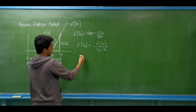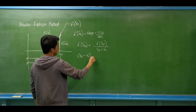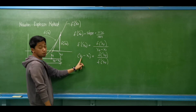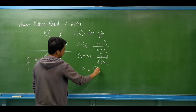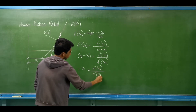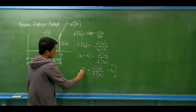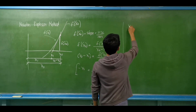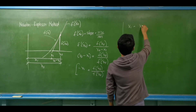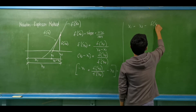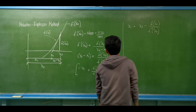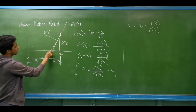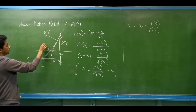We do a cross multiplication: x sub 0 minus x sub 1 is equal to f of x sub 0 divided by f prime of x sub 0. Then we transpose x sub 0, so negative x sub 1 equals f of x sub 0 over f prime of x sub 0 minus x sub 0. Multiplying both sides by negative 1, we get x sub 1 equals x sub 0 minus f of x sub 0 divided by f prime of x sub 0. We repeat this process until the tangent line passes through the root.